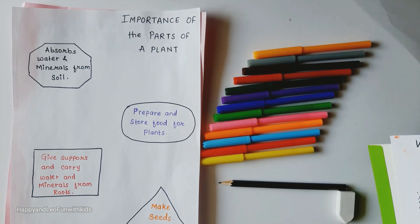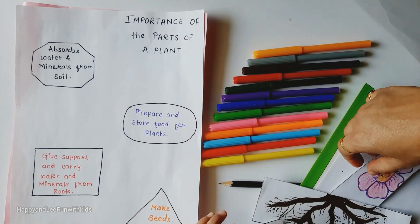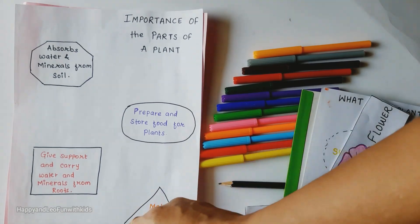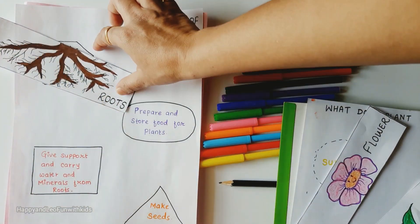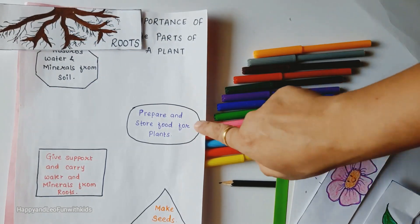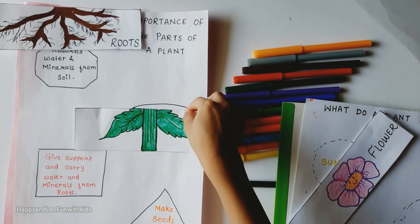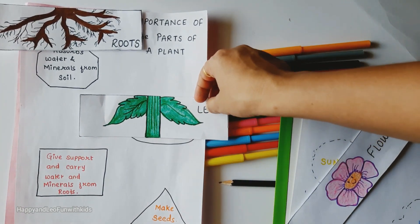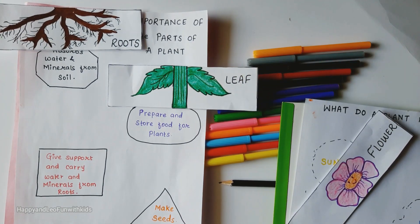For example, read it: it absorbs water and minerals from soil — which part of the plant performs that role? Root! Root absorbs water and minerals from soil. Second: prepare and store food for plants — leaf! Leaf prepares and stores the food for the plant.